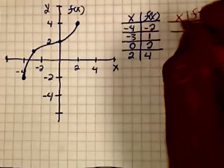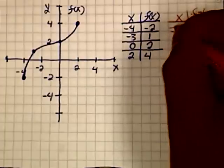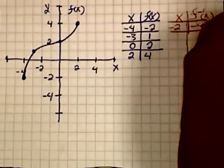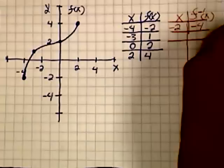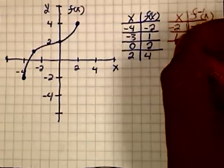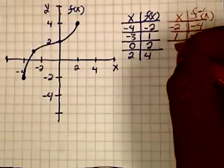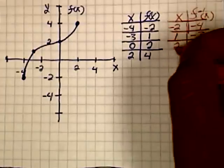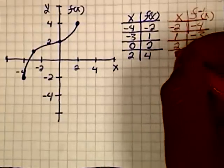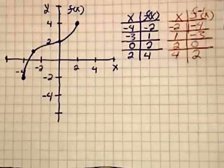So, the first point I will flip is the ordered pair negative 2, negative 4. I will then get the point 1, negative 3; 2, 0; and finally, 4, 2. I will now plot those points on the graph.